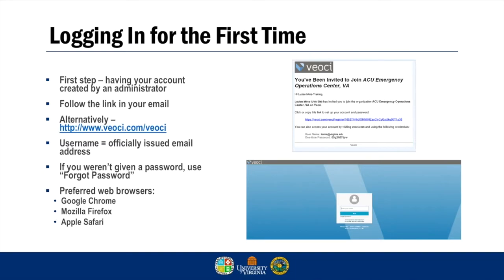Veochi is an easy-to-use, internet-based platform, so the first step to using it is having your account created by an administrator from your organization. Once your account is created, follow the link sent in your email or navigate your browser to www.veochi.com/veochi to be brought to the login screen. Your standard login will be your officially issued email address. If you use the link in your email, you will be guided through the account creation process.